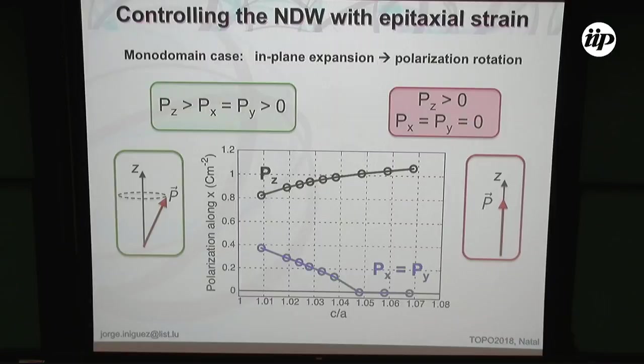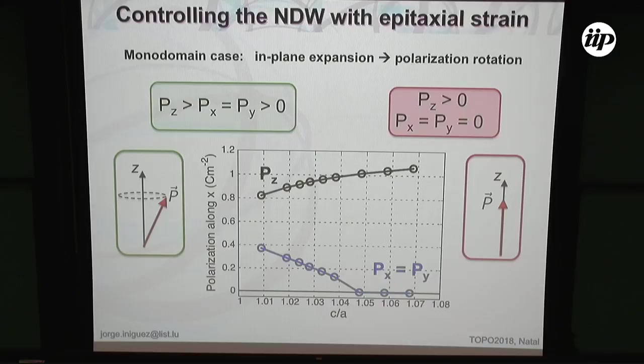One thing we thought was very interesting: can we manipulate this skyrmium? One very powerful way in ferroelectrics is to control the in-plane lattice constant — this could correspond to growing lead titanate on different substrates with different in-plane lattice constants. In ferroelectrics that's very powerful, because if you take lead titanate: over here in bulk conditions I have an out-of-plane polarization and zero in-plane — this is the tetragonal phase.